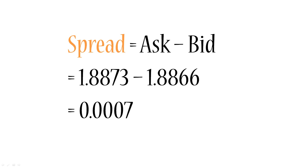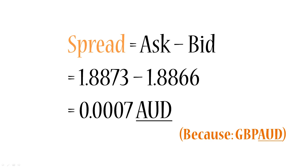That is 0.07 of an Australian cent, and this is in Australian dollars because the currency pair is British pound Australian dollar. So Australian dollar is the quoted currency. Remember our examples with apples — British pound here is like the apple, and Australian dollar is the currency that it's been valued in.